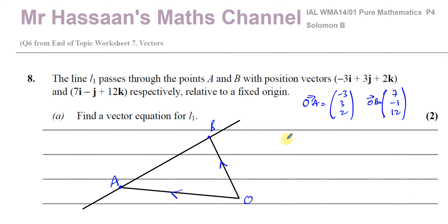We have to find a vector equation for L1. To find the vector equation for this line, we need two things: the position vector of a point on the line — we have two points so we can use either — and we need to know the direction of the line. The direction could be vector A to B, or B to A. So let's find what A to B is.